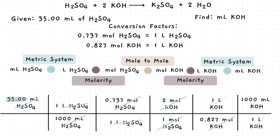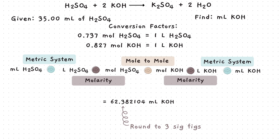Multiply the top numbers separately, the bottom numbers separately, then divide to get this value. Last step is to round to the lowest number of sig figs, which is 3. Our answer is 62.4 milliliters of potassium hydroxide.